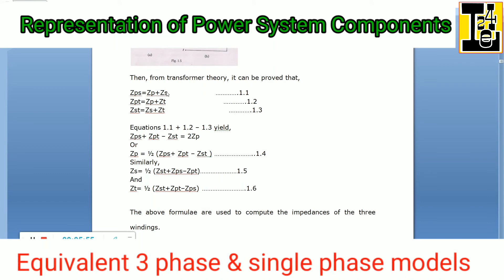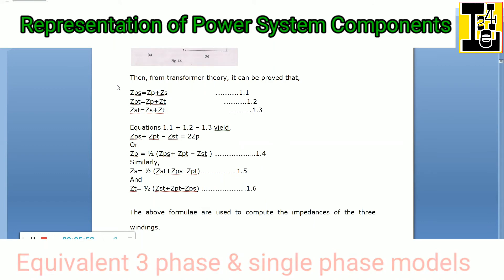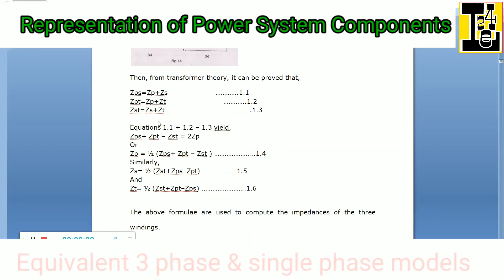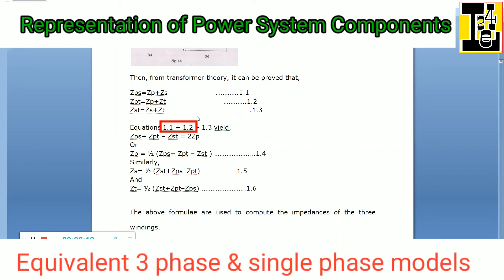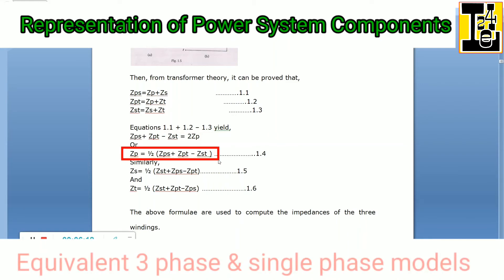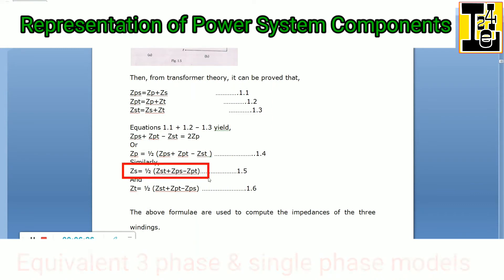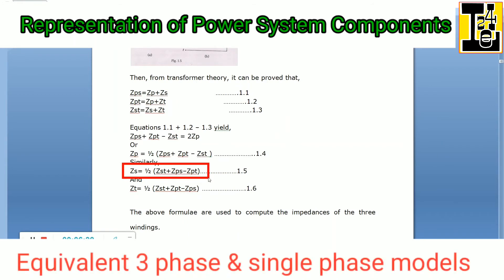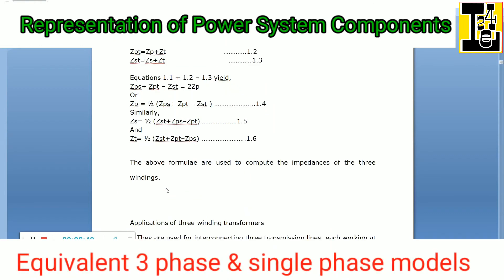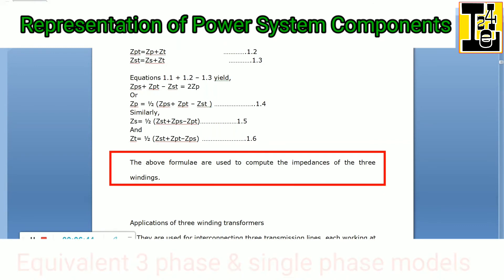Let us derive some formulae for the three-winding transformer. From transformer theory it can be proved that: Zps equals Zp plus Zs; Zpt equals Zp plus Zt; Zst equals Zs plus Zt. Adding the first two equations and subtracting the last gives Zp equals half of (Zps plus Zpt minus Zst). Similarly, Zs equals half of (Zst plus Zps minus Zpt), and Zt equals half of (Zst plus Zpt minus Zps). These formulae are used to compute the impedances of the three windings.